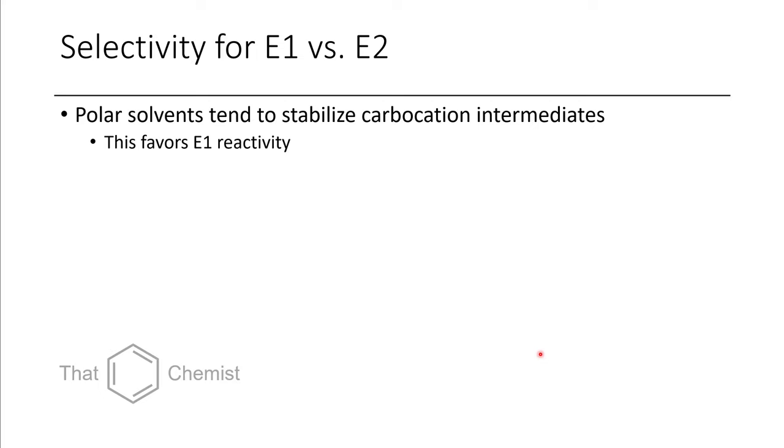Now, if we're trying to select between E1 and E2, it's important to choose the correct solvent. So if you choose a very polar solvent, this will stabilize higher energy intermediates such as carbocations.